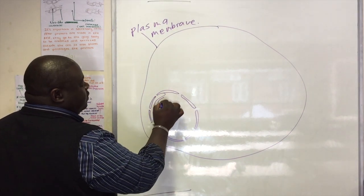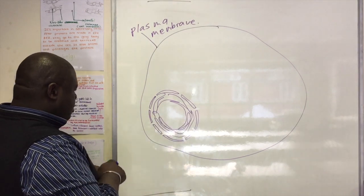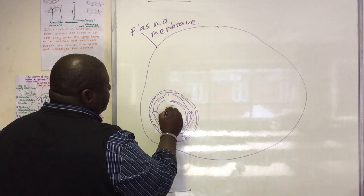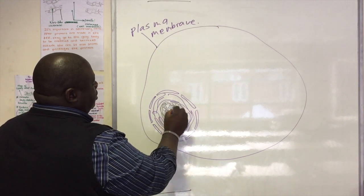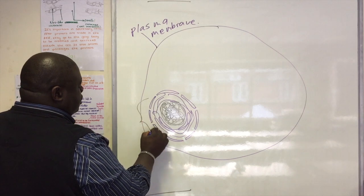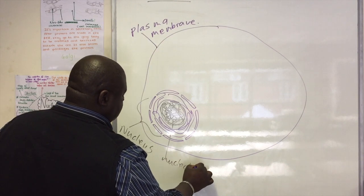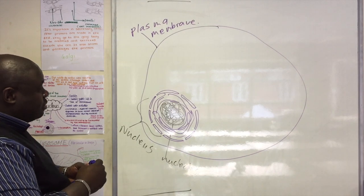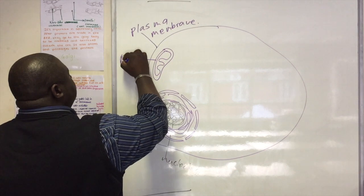Within the nucleus you would have chromatin, which is simply the loose DNA, and you can have the nucleolus — the dark-staining region in the nucleus. The rest I'm going to add quickly without speaking, just to say that you have seen all this before, so you should know what I'm talking about.